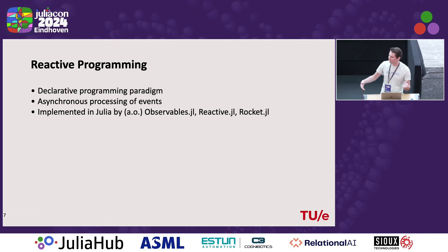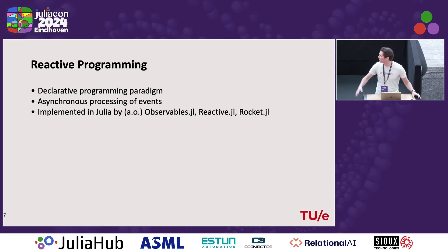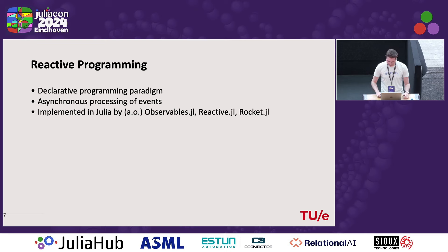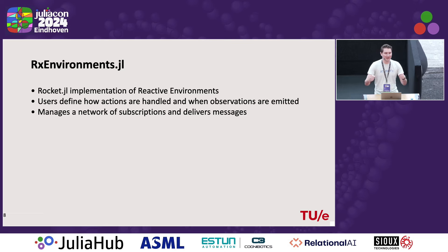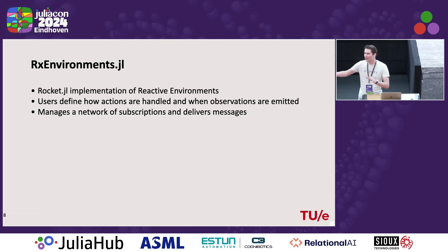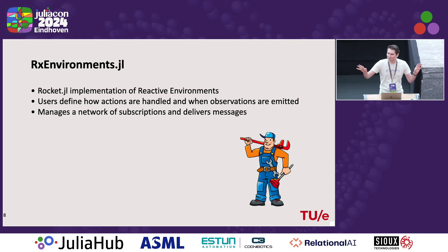How I'm going to realize that is through reactive programming — a declarative programming paradigm where we basically only specify how we handle certain events, and then by letting these events happen, the control flow appears. It is implemented in Julia by Observables.jl, Reactive.jl, and Rocket.jl — all kinds of packages to get reactive behavior inside your Julia functions. RxEnvironments.jl is a particular implementation of reactive environments in Rocket. It will manage this network of subscriptions for you, making sure that the right actions are delivered at the right places — kind of like a plumber, but for your environment design.